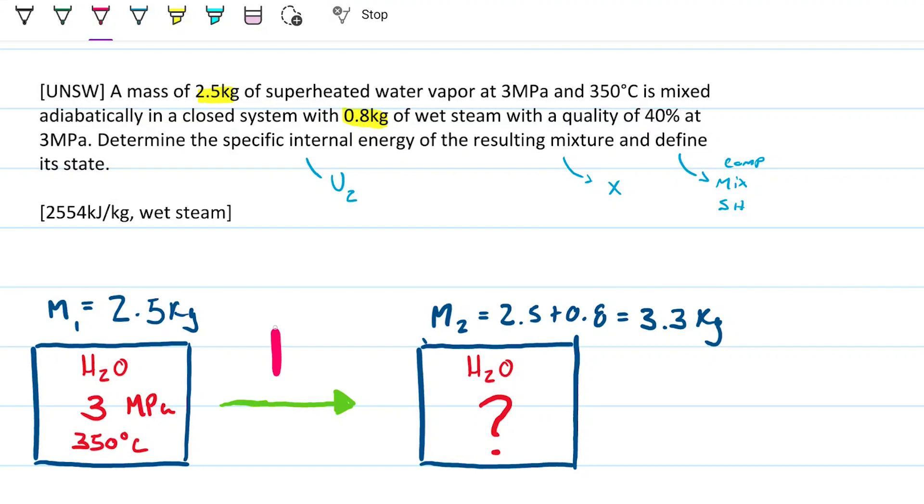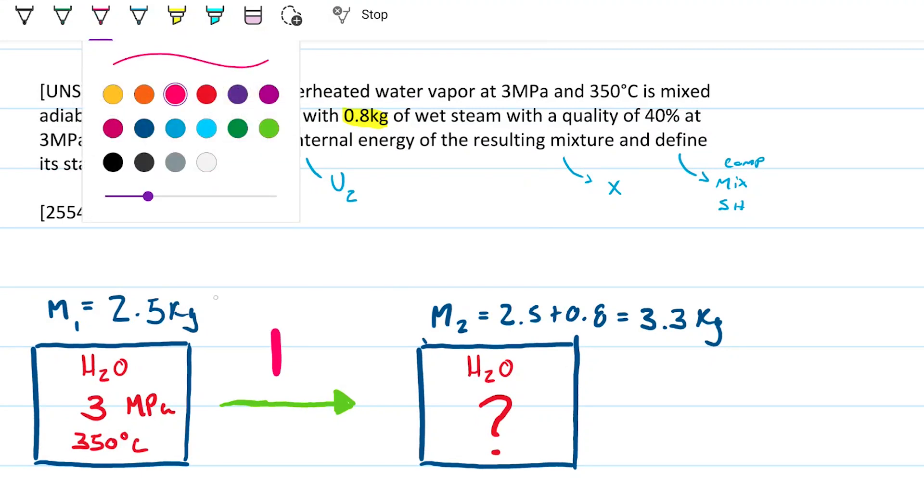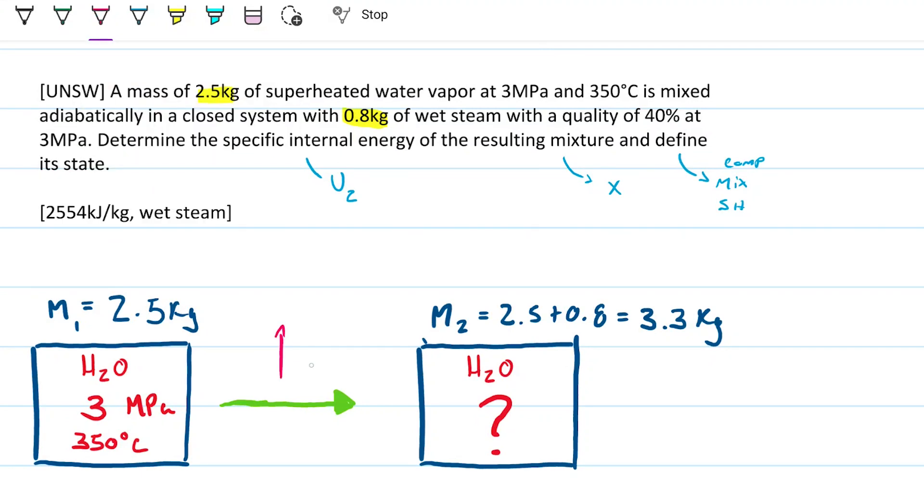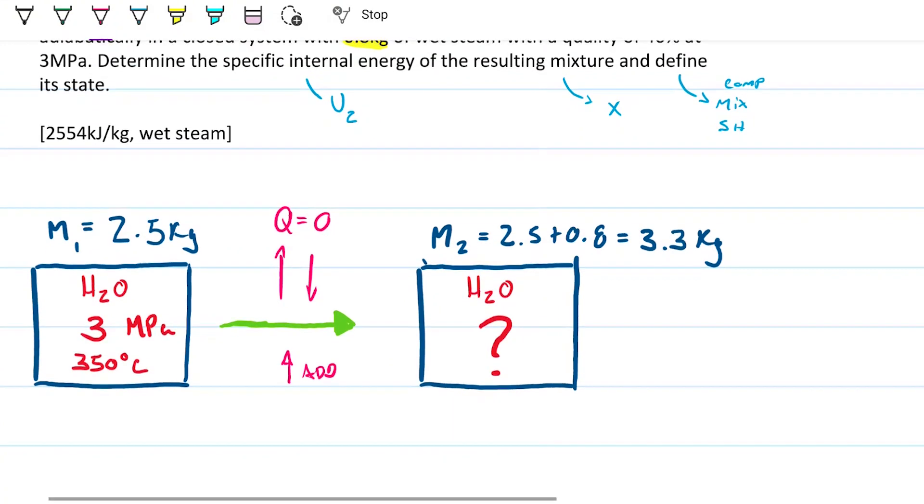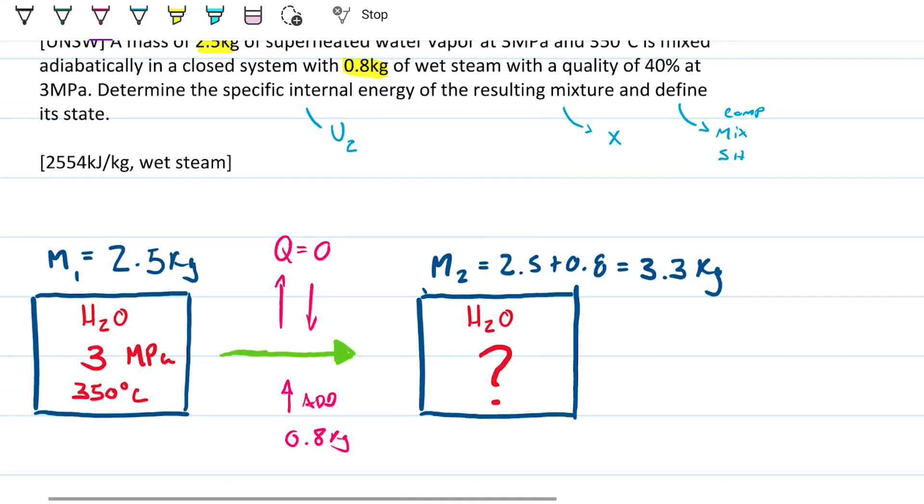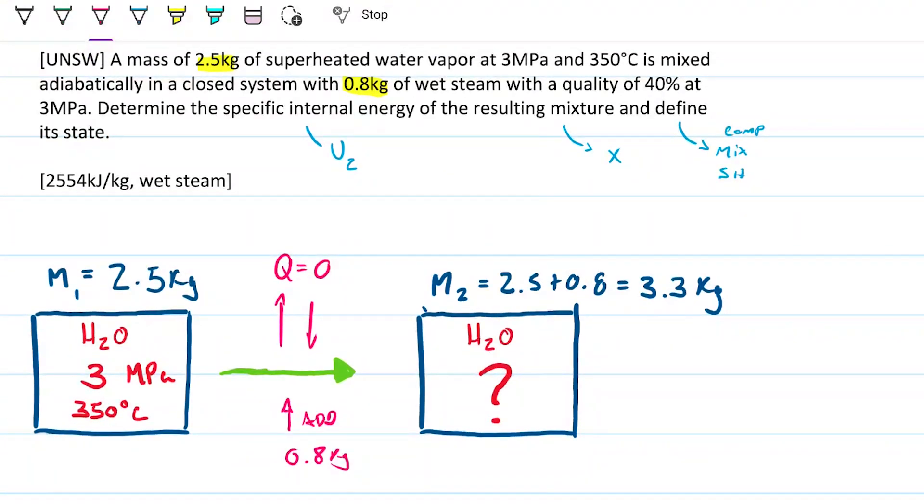But this is adiabatic, so we don't have any heat entering or leaving your system, right? This is zero, but we do have the addition of water. We're adding 0.8 kilograms of water, and this water has certain properties, right? This water has 40% quality and 3 megapascals, so it's pressurized and it has a certain quality to it. Why is that relevant?